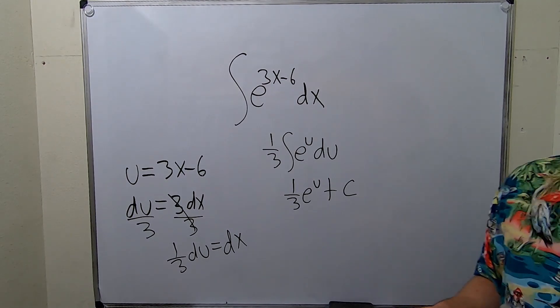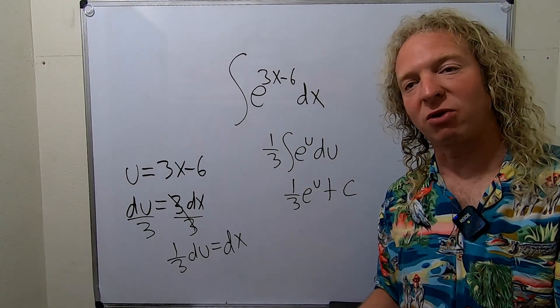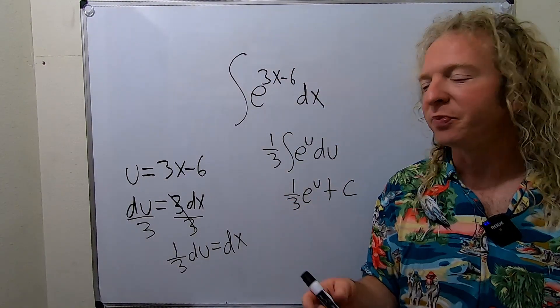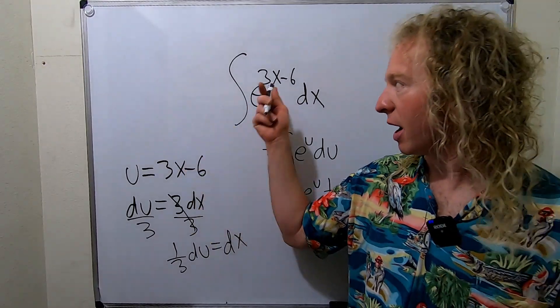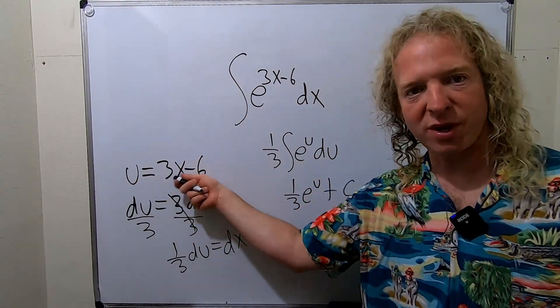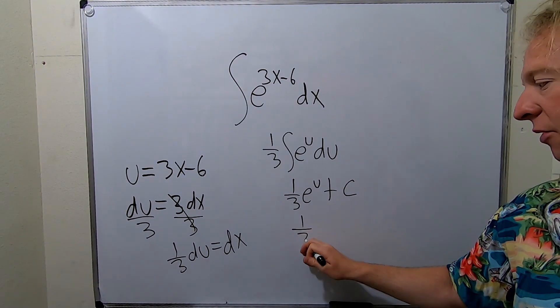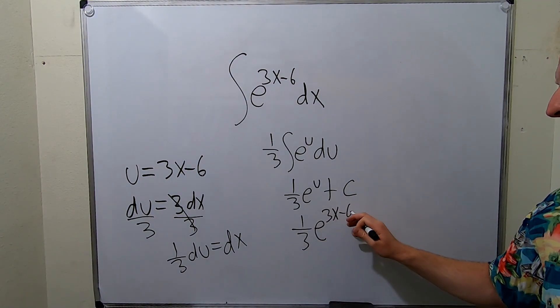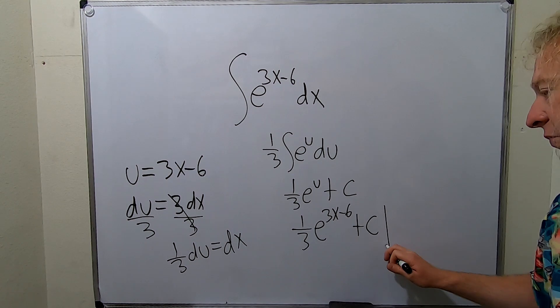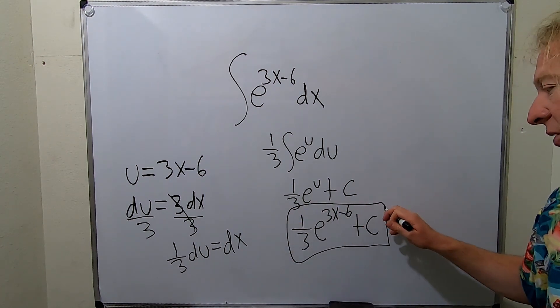The very last thing to do in a problem like this is always go back to x or the original variable, whatever it may be. In this case, we started with x. So we go back to x. So u is 3x minus 6. This is 1 third e to the 3x minus 6. And let's not forget our capital C. And that would be the final answer.